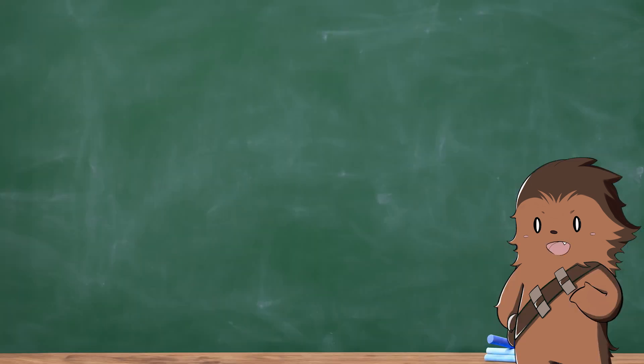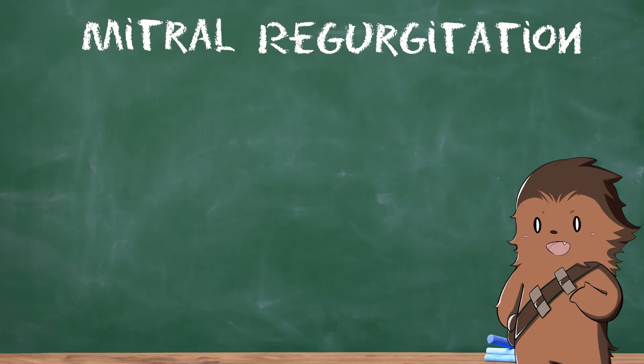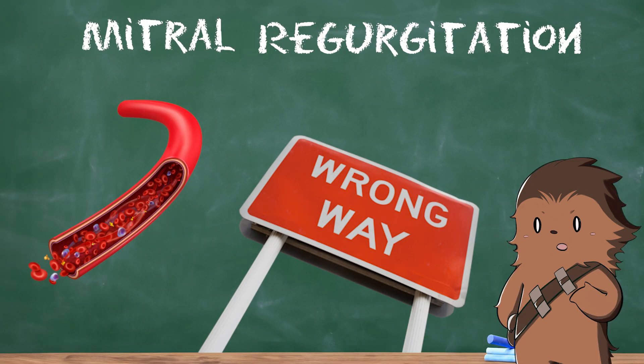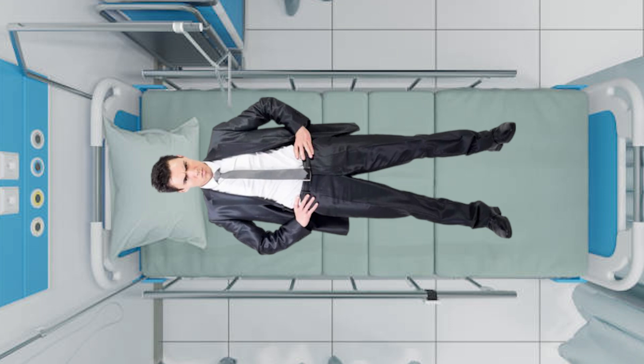The main complication of MVP is mitral regurgitation. This means blood leaks the wrong way through your valve. If the leak is severe enough, you may need surgery or a procedure to help your valve work as it should.